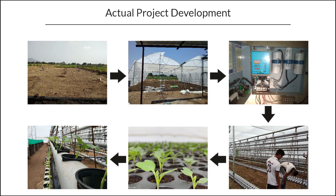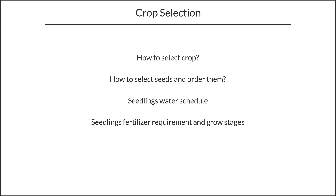At this point we have sufficiently covered our information and research phase. Now we will move into actual project development, where we will set up a Hydroponics project on our own in 40 days. We will cover every aspect of the project development with proper images, videos, and guidelines.